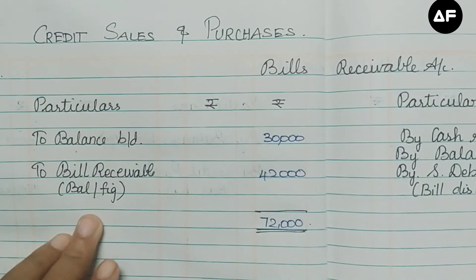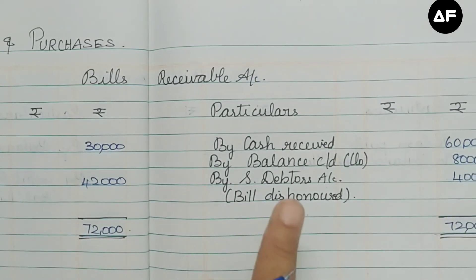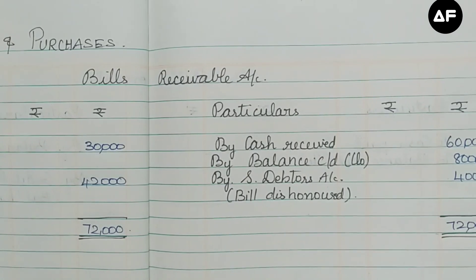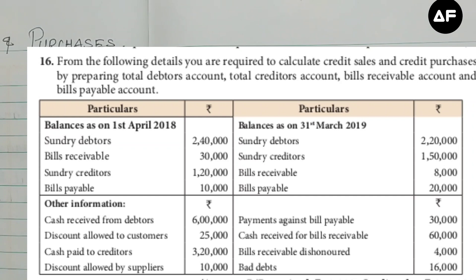The dishonor on the credit side of the bills receivable account must be transferred to the debit side of the sundry debtors (total debtors) account. For the total debtors account, the debit side needs the opening balance of sundry debtors — 2,40,000 — and the bills dishonored of 4,000. The credit side will have cash received from debtors of 6 lakhs, discount allowed, bad debts, the closing balance, and the bills receivable balancing figure of 42,000.